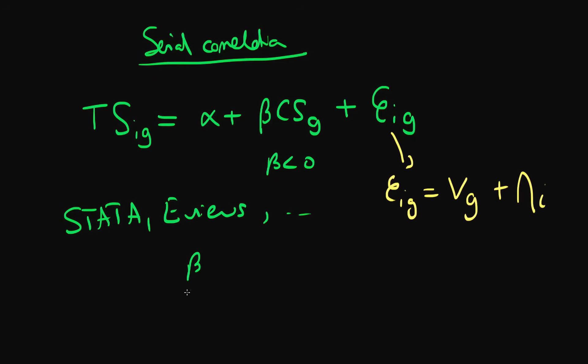Perhaps it outputs a value of beta which is minus 10, so for every one unit increase in the classroom size there is a corresponding 10 unit decrease in the test scores on average. Our model will also output estimates of our standard error in beta, perhaps 1.5.